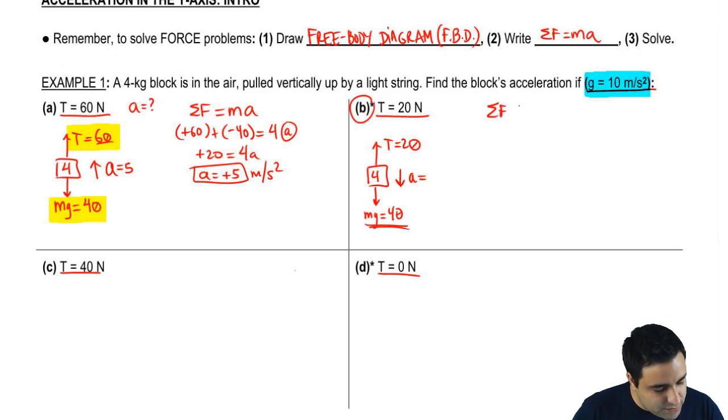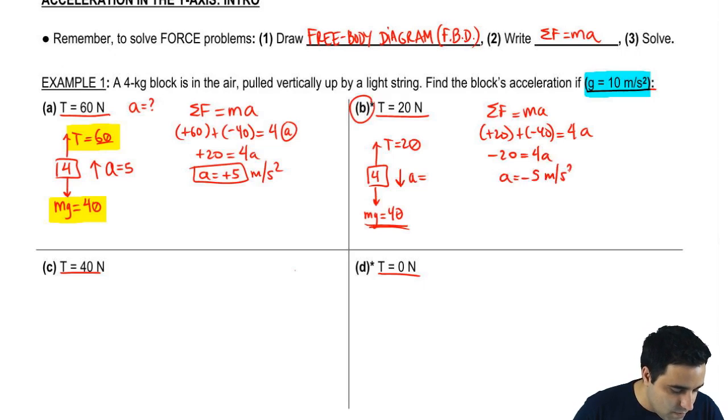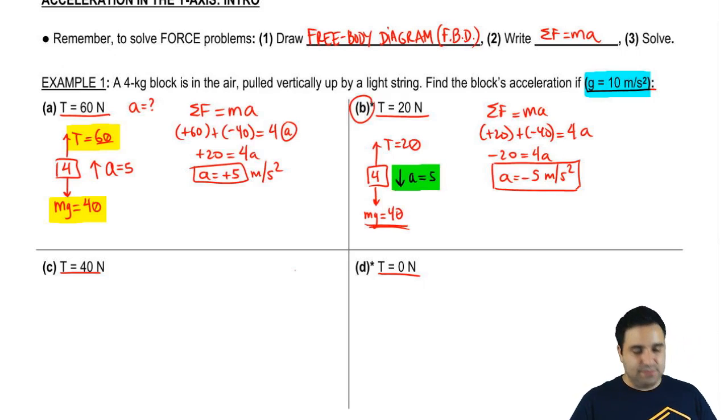So I'm going to say the sum of all forces equals ma. I have a 20 up, a 40 down. The mass is 4. And if you solve for this, you get negative 20 equals 4a, and a equals negative 5. The fact that it's a negative tells me that it's going down. So I can just draw it here as a equals 5 with an arrow down. It's the same thing as writing a equals negative 5. And that's the end of that one.